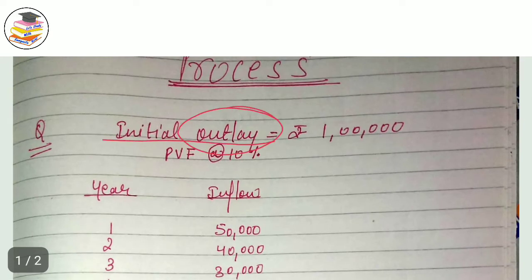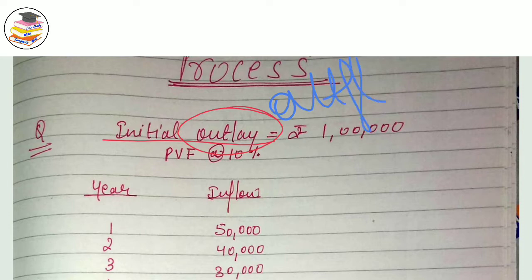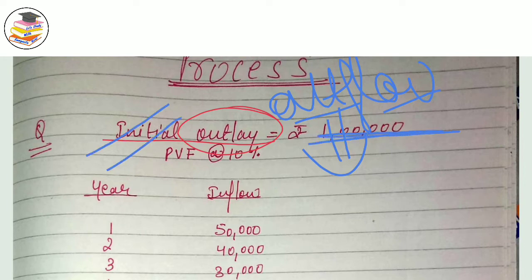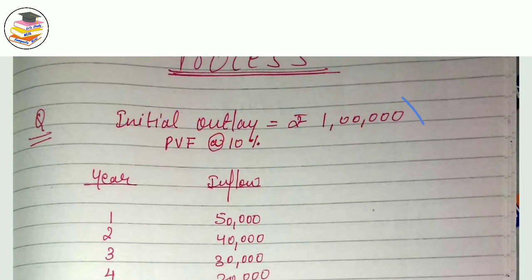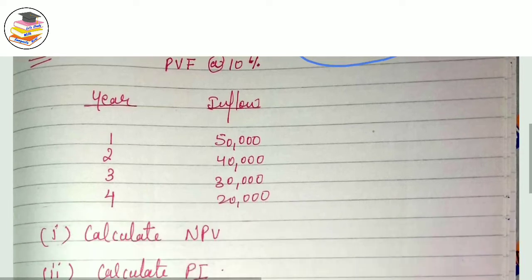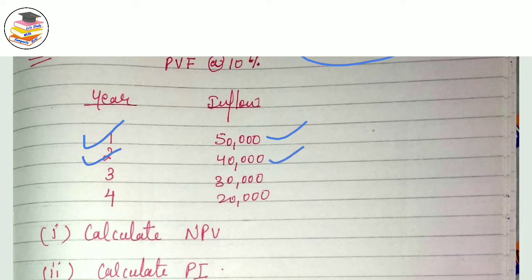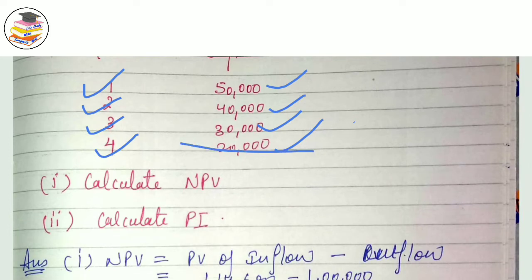Let's see what is your question here. Initial outlay means outflow. The meaning of outflow and inflow. Initial outlay is 1,00,000 rupees. PVF at 10%. And the inflow in your year is so much. That means you have got one lakh rupees and you are getting every year: in the first year 50,000, in the second year 40,000, in the third year 30,000, in the fourth year 20,000.